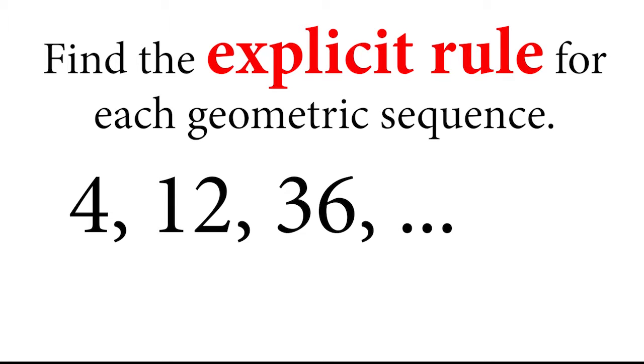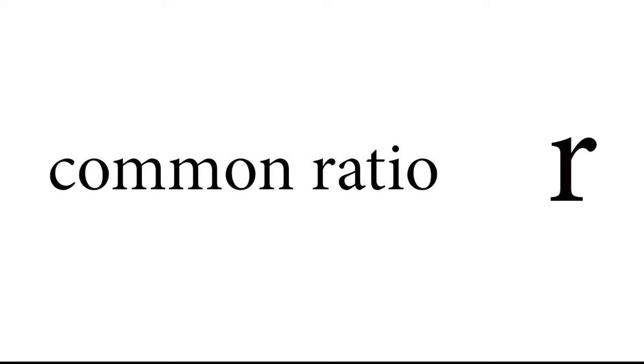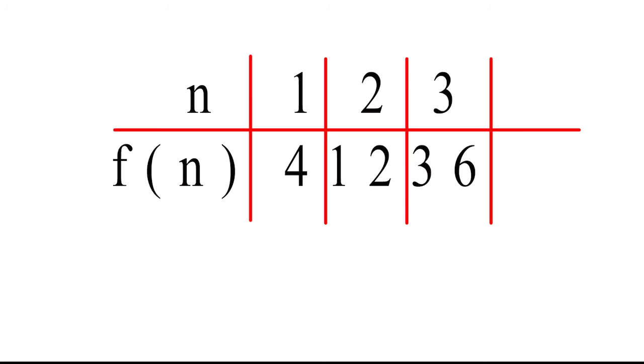Find the explicit rule for the geometric sequence, 4, 12, 36. First, find the common ratio, r.